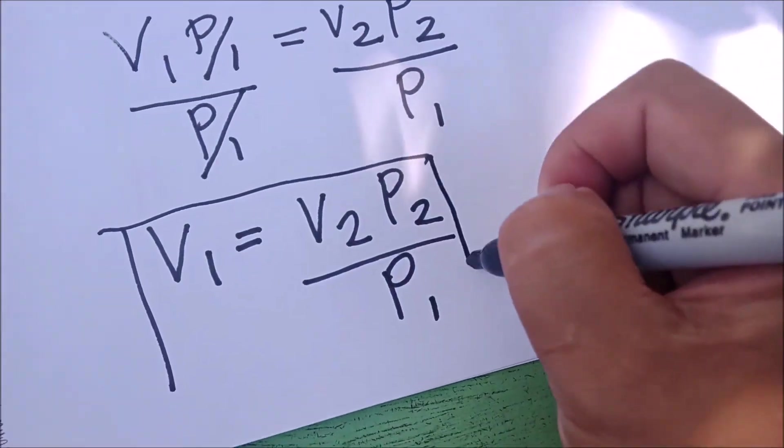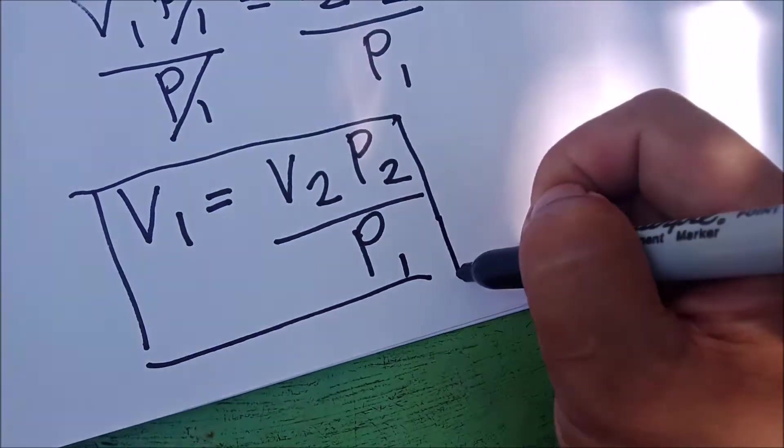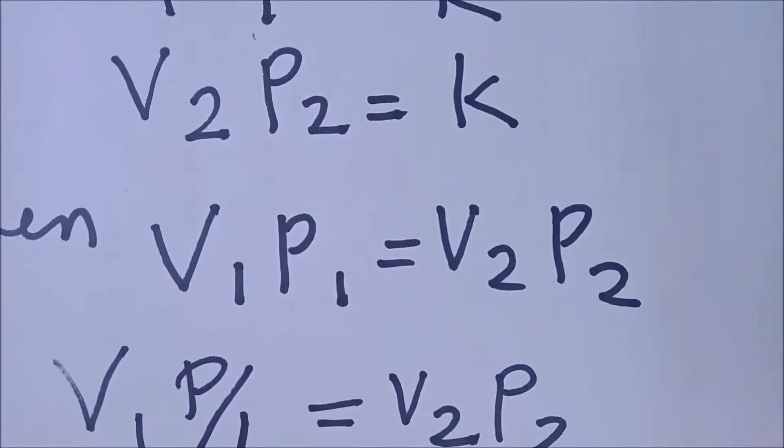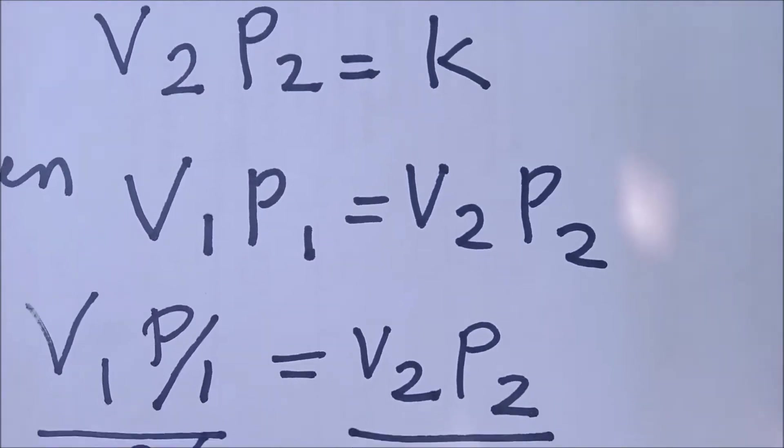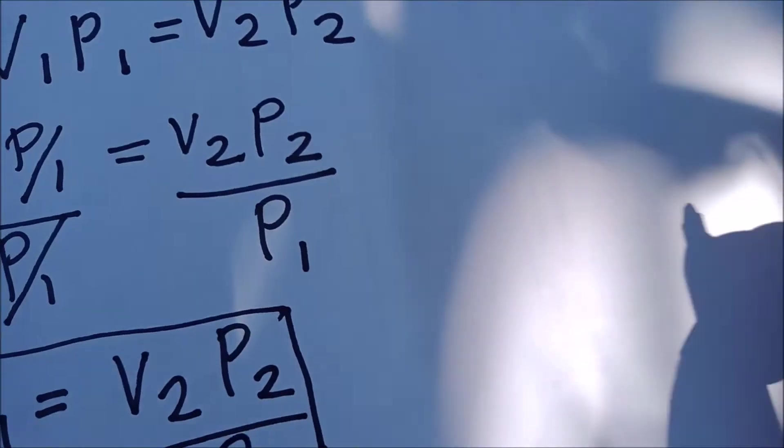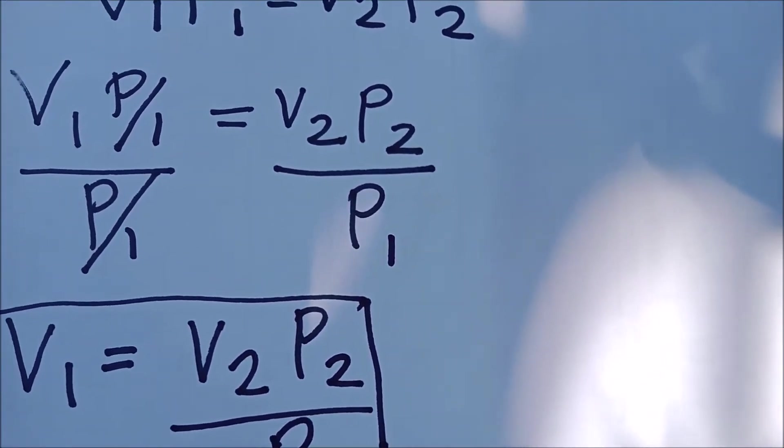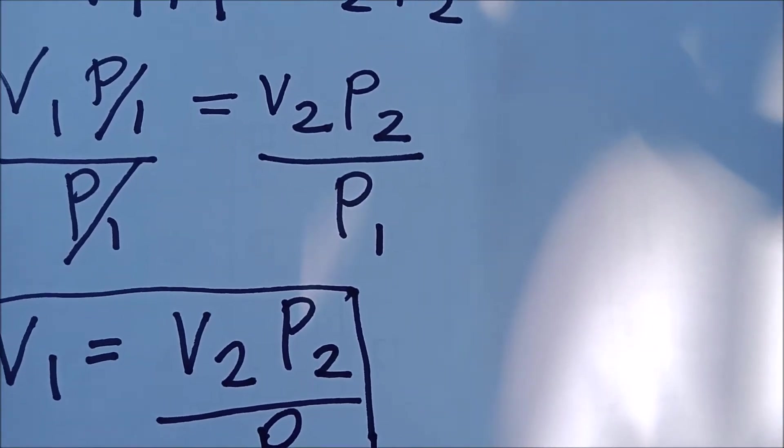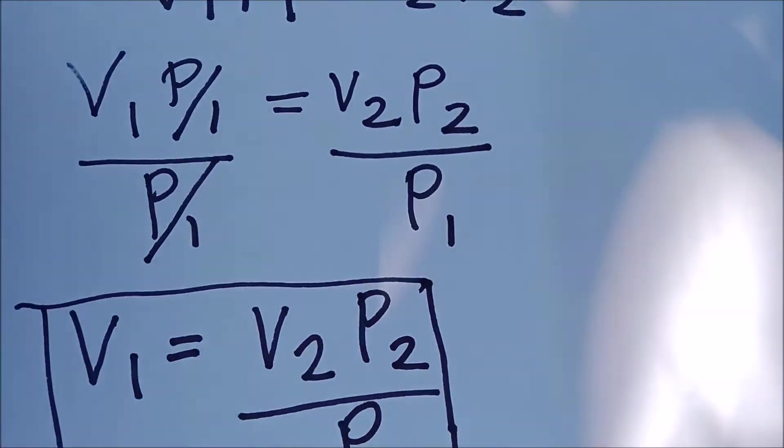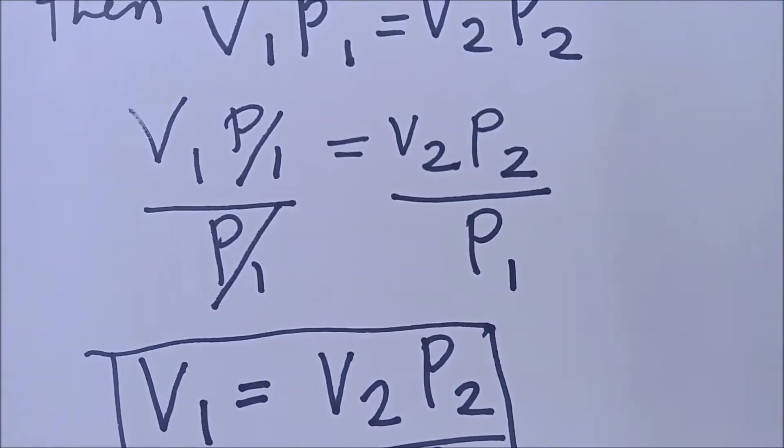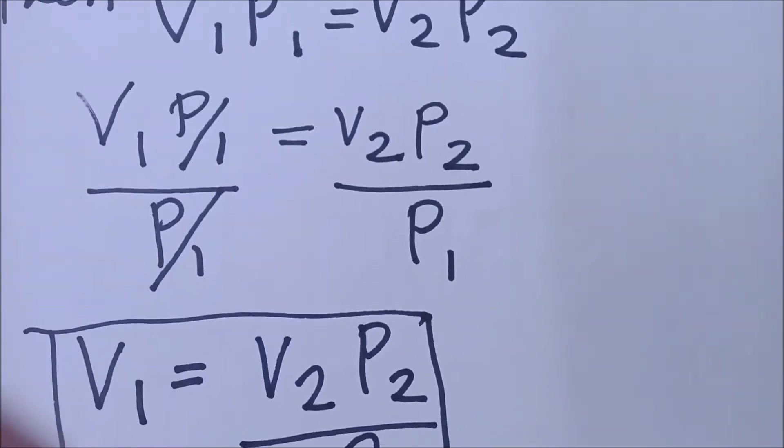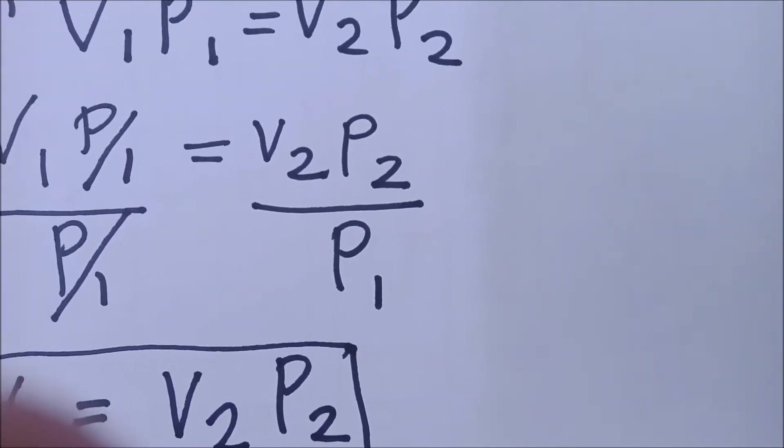Our formula for V1 becomes V2, P2 over P1. That is one formula that we got from the Boyle's Law. Another formula, what if you need to use the formula for P1 or meaning in a problem, you're looking for P1.